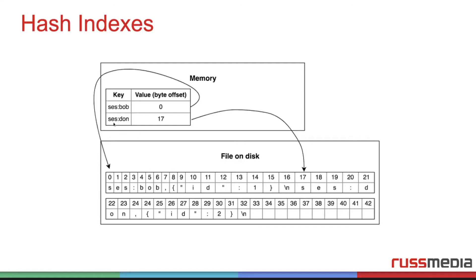And for Don, the second one, we have an offset of 17. So we look at the 17th byte — sorry, bytes — and see it says Don, the same as above with his ID.